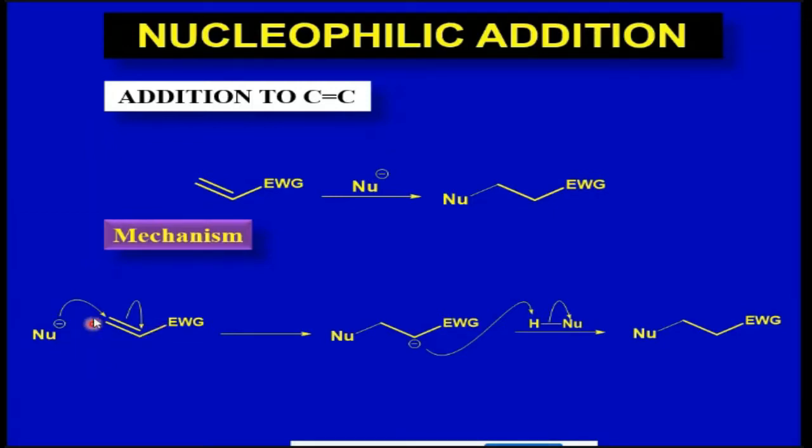If it attacks on this carbon atom, the carbanion intermediate will be formed here. But if it attacks here, the carbanion is formed here and is stabilized by this electron withdrawing group. So it will preferentially attack this carbon atom rather than this one. And in the final workup step it takes a proton to give you this structure.